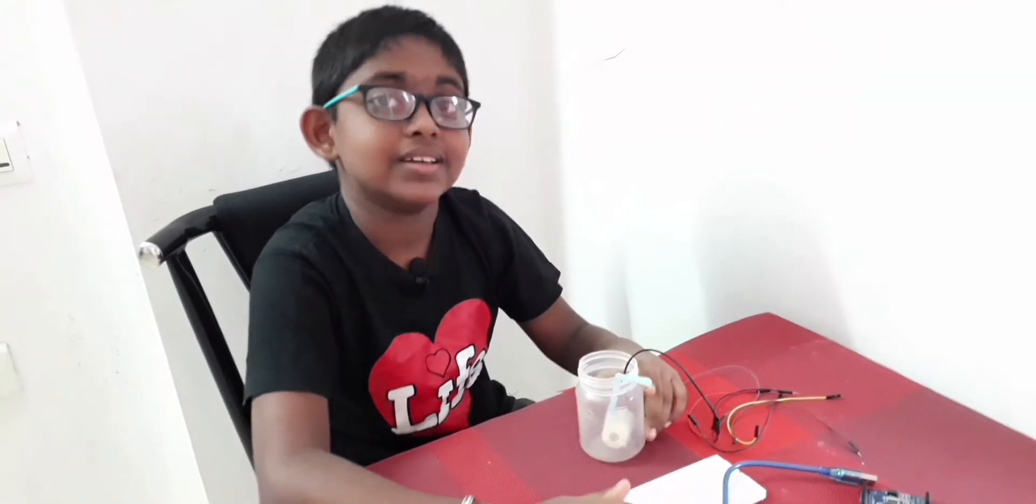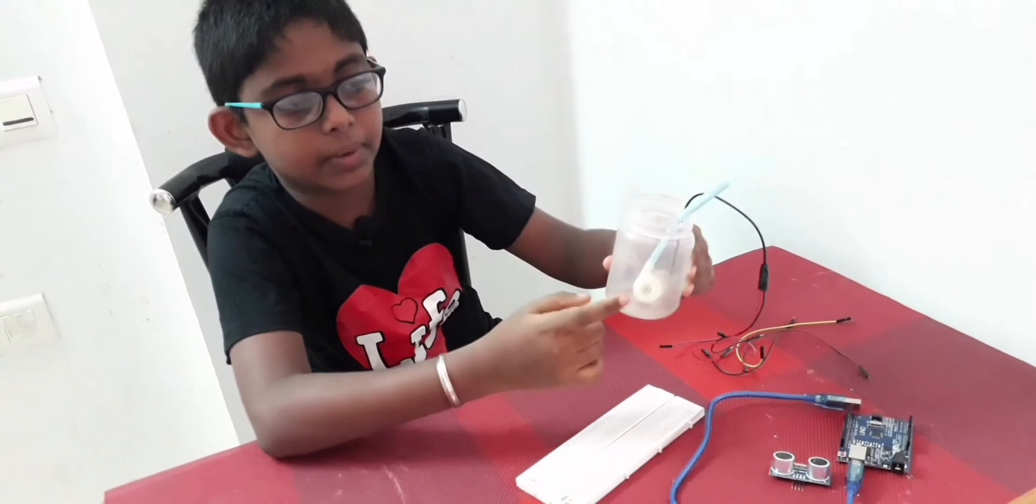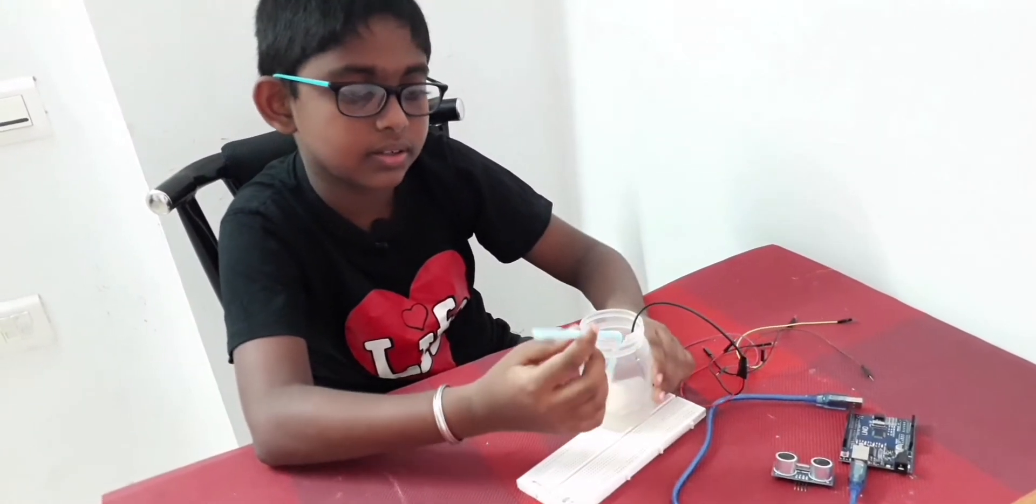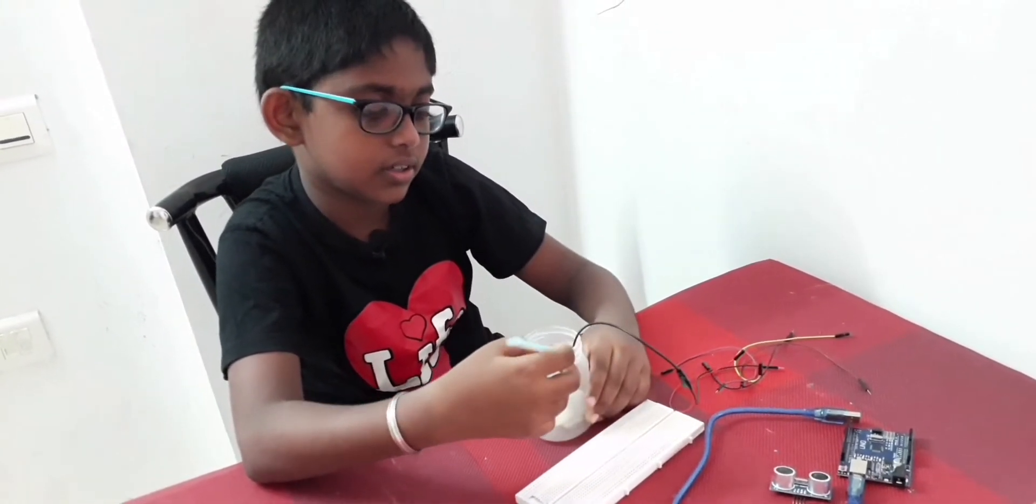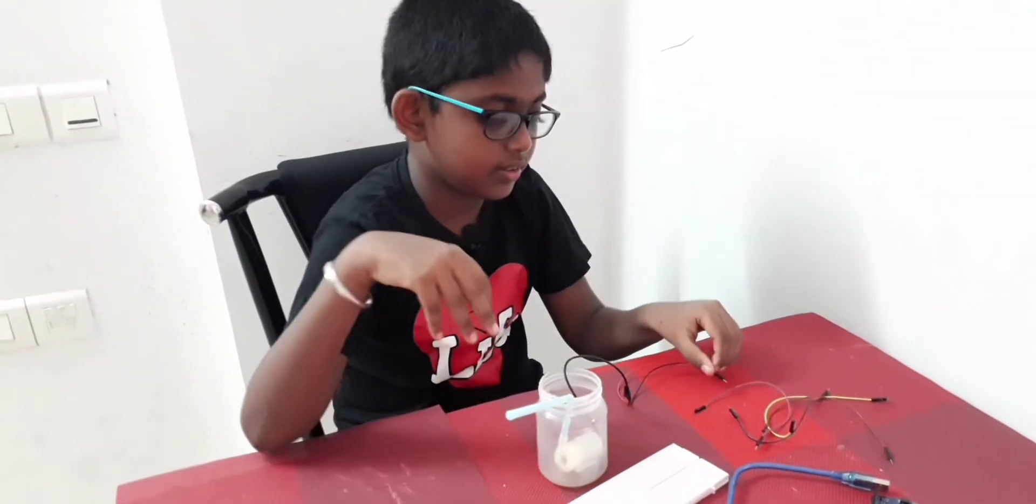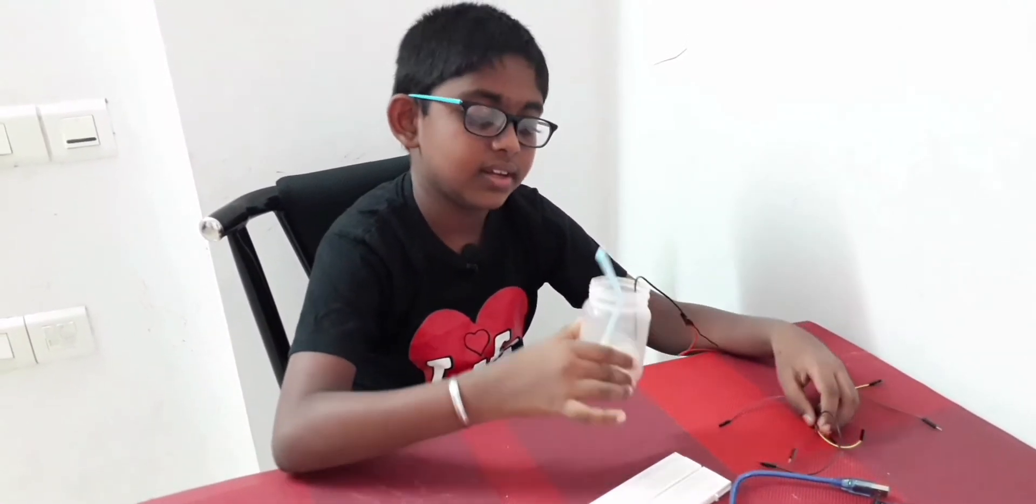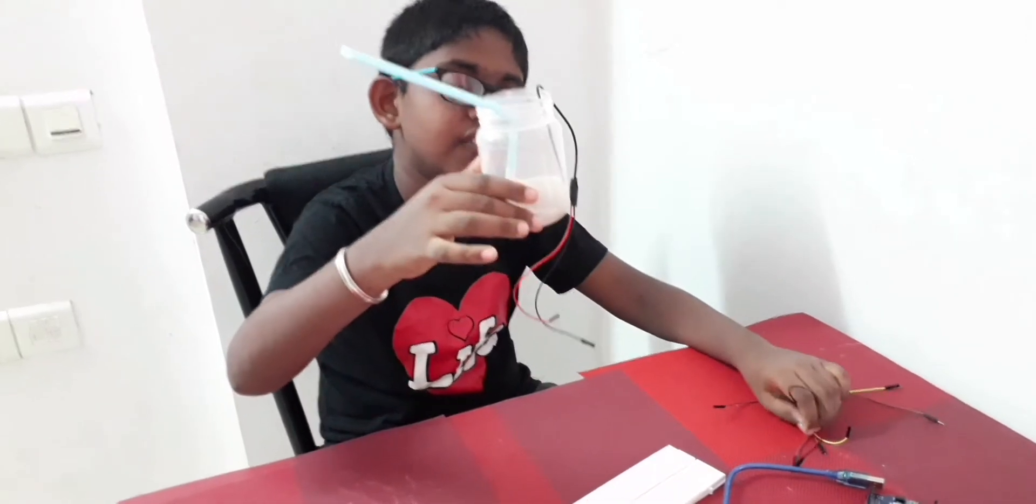So let's start. The materials needed are a pump, a bottle and a straw. I have taken the pump's wire like this. This is a 6 volt pump and it's commonly, it's easily available.